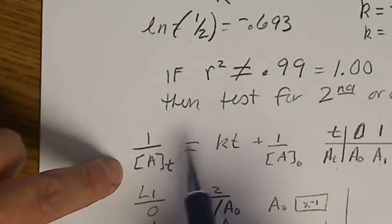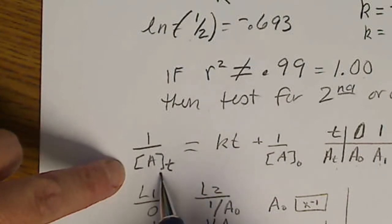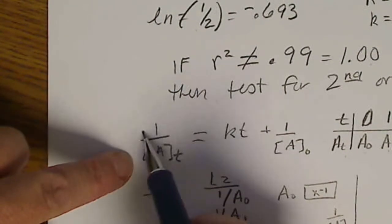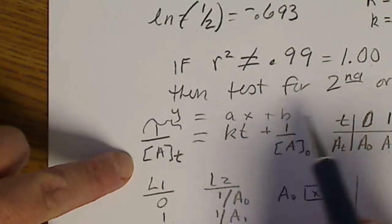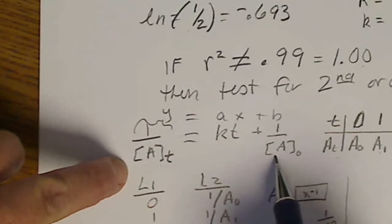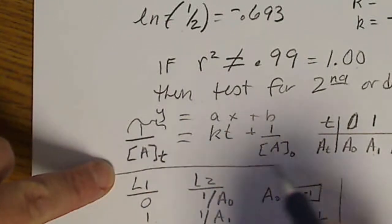That will take the reciprocal of that value. So if we graph this 1 over the concentration, look at this equation, this is in place of our Y. So this is also a Y equals AX plus B, this is a linear equation that we would get from second order kinetics.